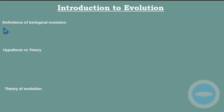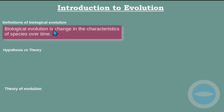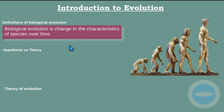Biological evolution is a change in the characteristics of a species over time. If there is a change of characteristics or genetic material of a certain species, this process we call biological evolution. For example, looking at this sketch of humans, it is believed that we were walking like monkeys until we evolved after millions of years to become what we are now.